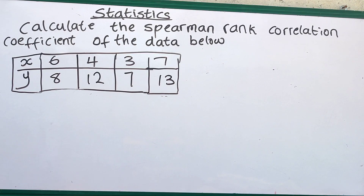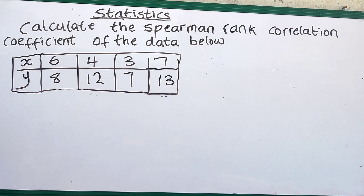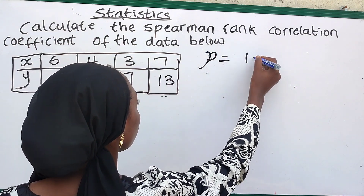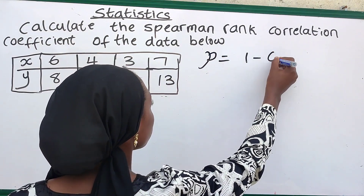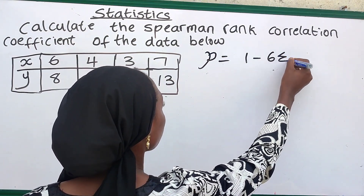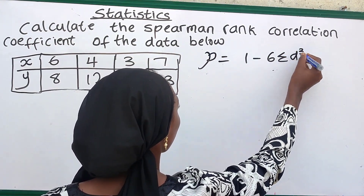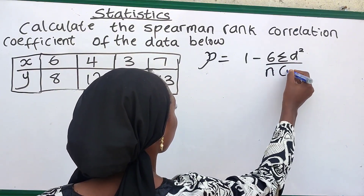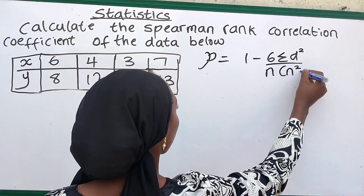Calculate the Spearman rank correlation coefficient of the data below. We are calculating the Spearman rank correlation coefficient of this data. The first thing we are going to do is write out our formula: 1 minus 6 multiplied by the summation of D squared, over n multiplied by n squared minus 1.